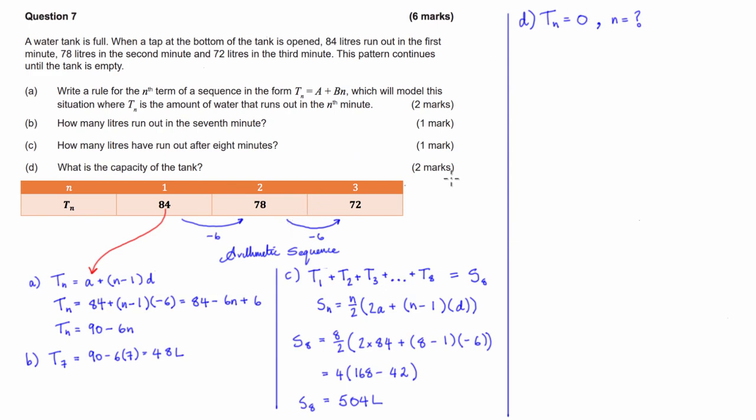So to start with, we can use that initial formula that we found in part A. 90 take 6n. So we can say 90 subtract 6n is going to have to equal 0. We can do a little bit of rearranging, and we can then say that n is going to equal 90 over 6, which is then equal to 15. So the tank is going to run out of water after 15 minutes.